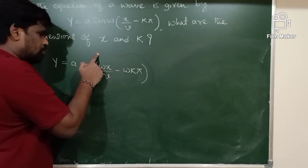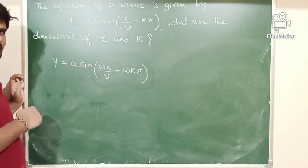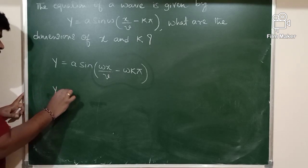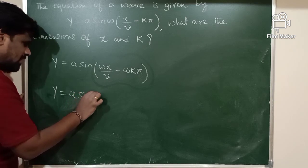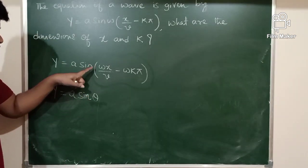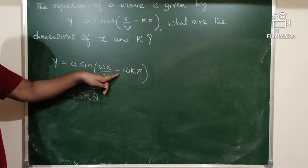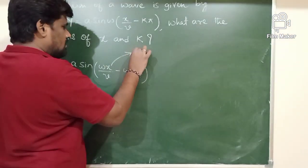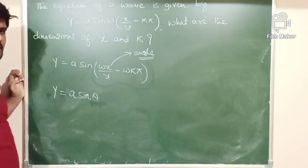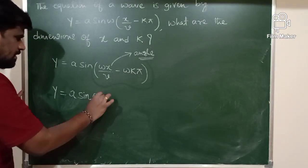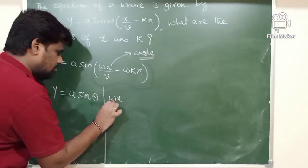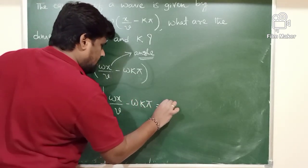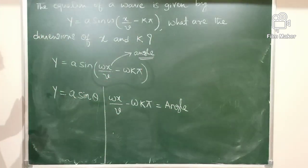Definitely, this entire term inside the sine function should be theta — an angle. So the equation is Y = A sin θ, where θ equals ωX/V minus ωK·π. This complete term is an angle, meaning ωX/V minus ωK·π should be an angle.